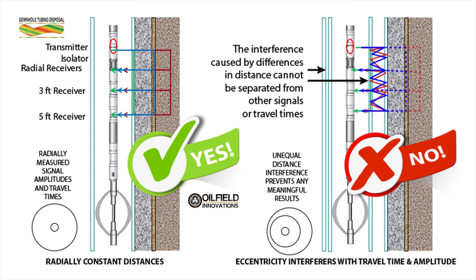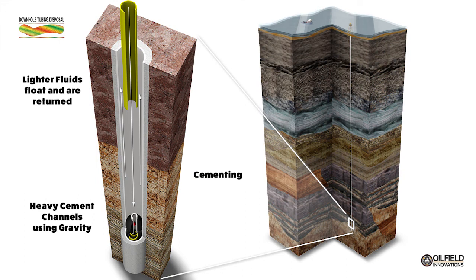The next step in downhole tubing disposal is placing cement. For instances where the logging shows damaged cement, we have a later video explaining how it can be fixed. For now let's assume that the cement behind the casing is good and we can set the abandonment cement plug. Downhole tubing disposal uses the existing in-place tubing to place the cement plugs. You pump through the center part of the tubing and take returns through the annulus and the well head valves. Cement is much heavier and thicker than the fluids within the well and will channel until it reaches the support of the inflatable packer, where it will begin to fill up the well and form the abandonment plug.